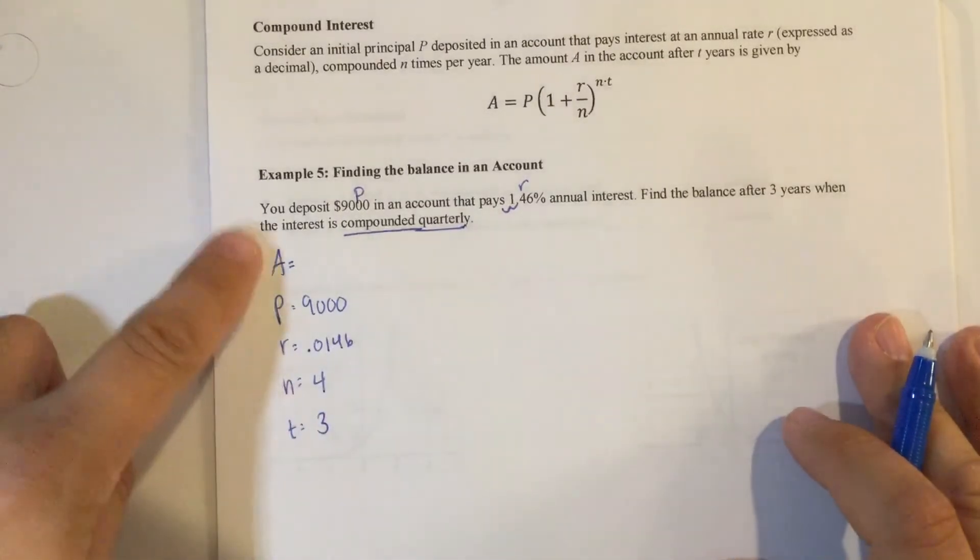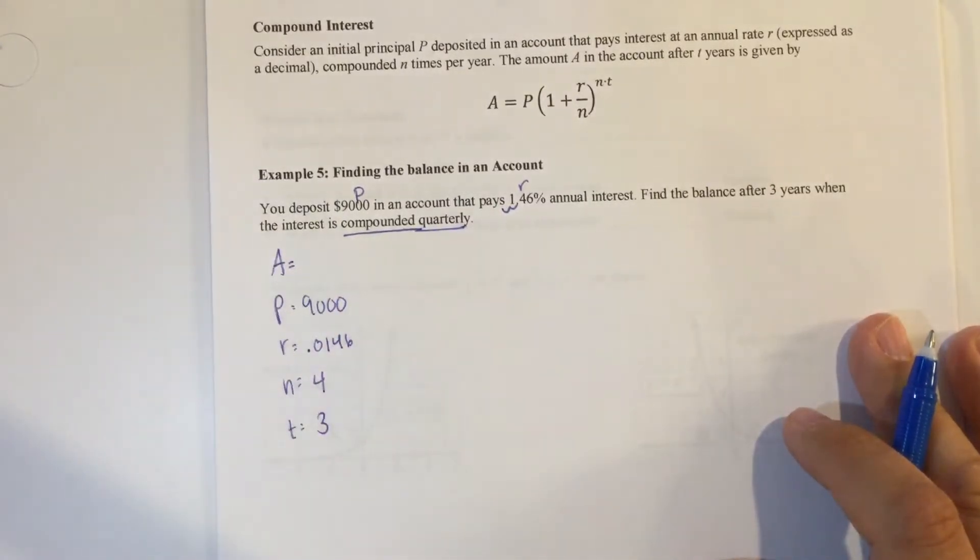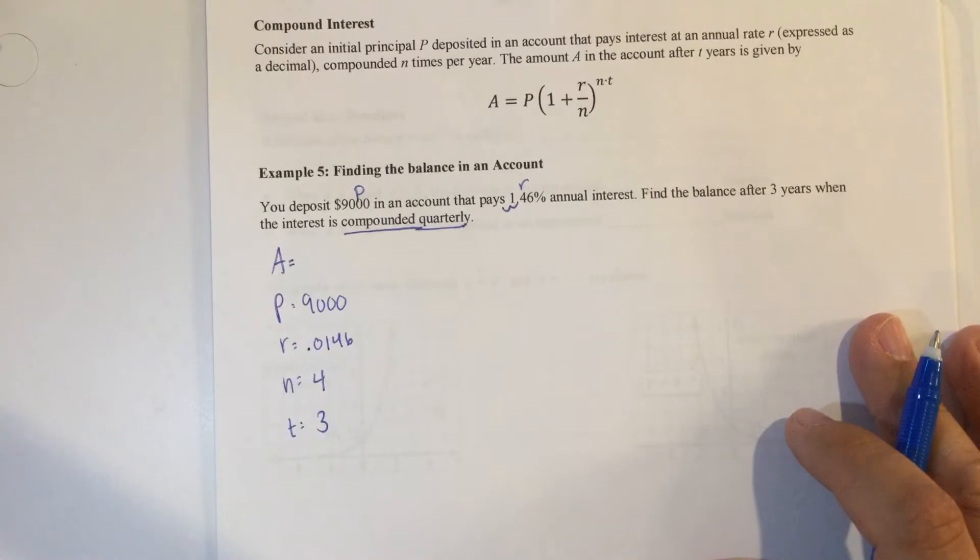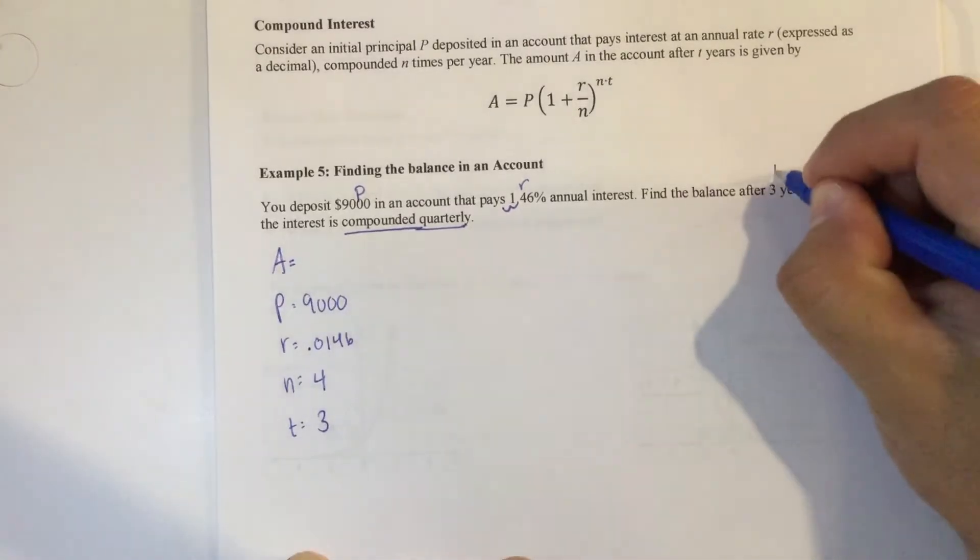The only thing I don't know is A. So that's what it wants to find out. You deposit $9,000 in an account that pays 1.46% annual interest. Find the balance after three years if it's compounded quarterly.